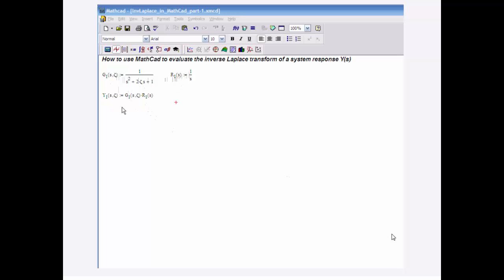So I'm going to put a unit step in time into the system, and I'm going to watch the system respond. The system response will be Y1, which in the Laplace domain is the product of my system transfer function times the excitation R1, which is 1 over S.